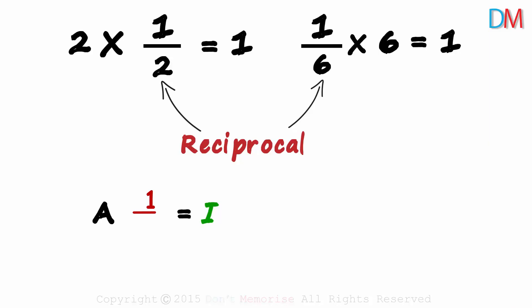Instead of writing 1 over A, we write something called A inverse. Yes, this is the inverse of matrix A. A with negative 1 as the superscript. And A times A inverse will give us the identity matrix.